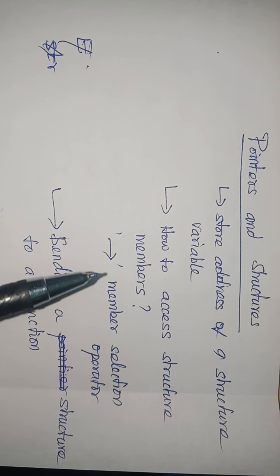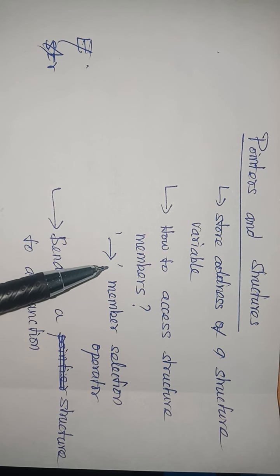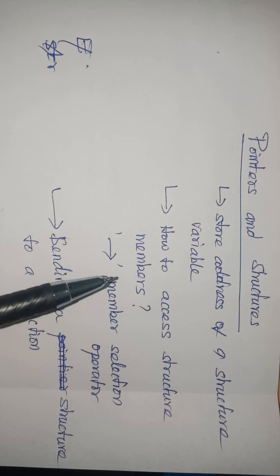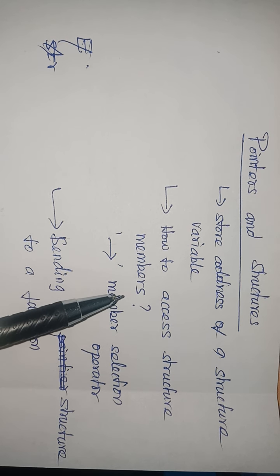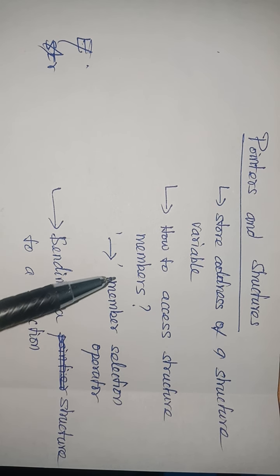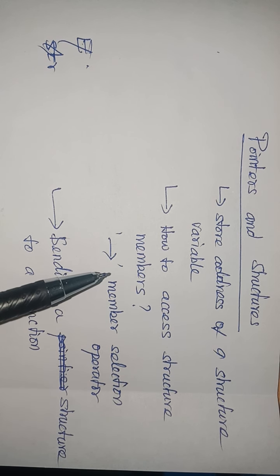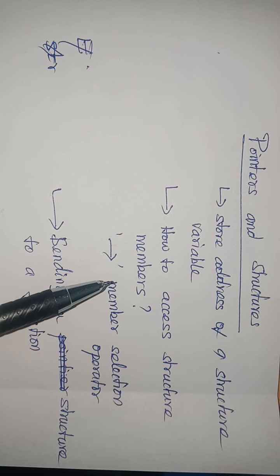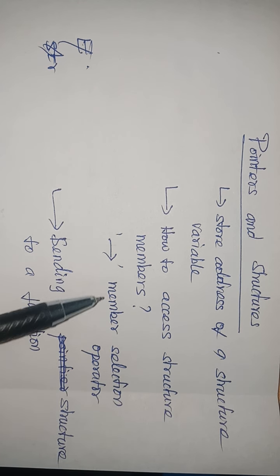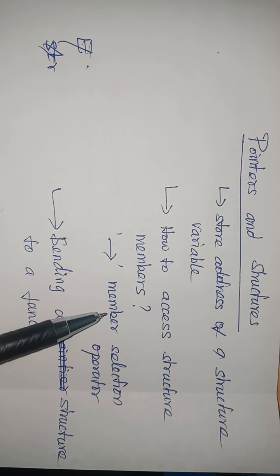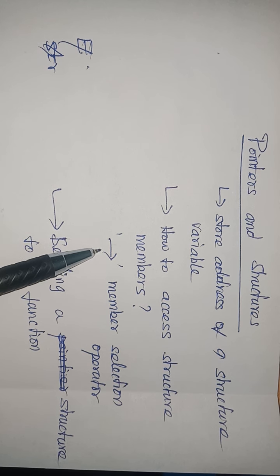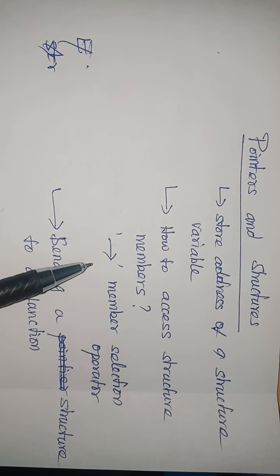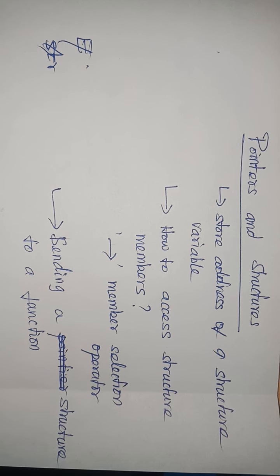Recall that whenever we want to access a structure member, we use the dot operator. Structure variable together with dot operator can access the members. But here, pointer variable together with arrow operator, otherwise called the member selection operator, can be used to access the structure members.